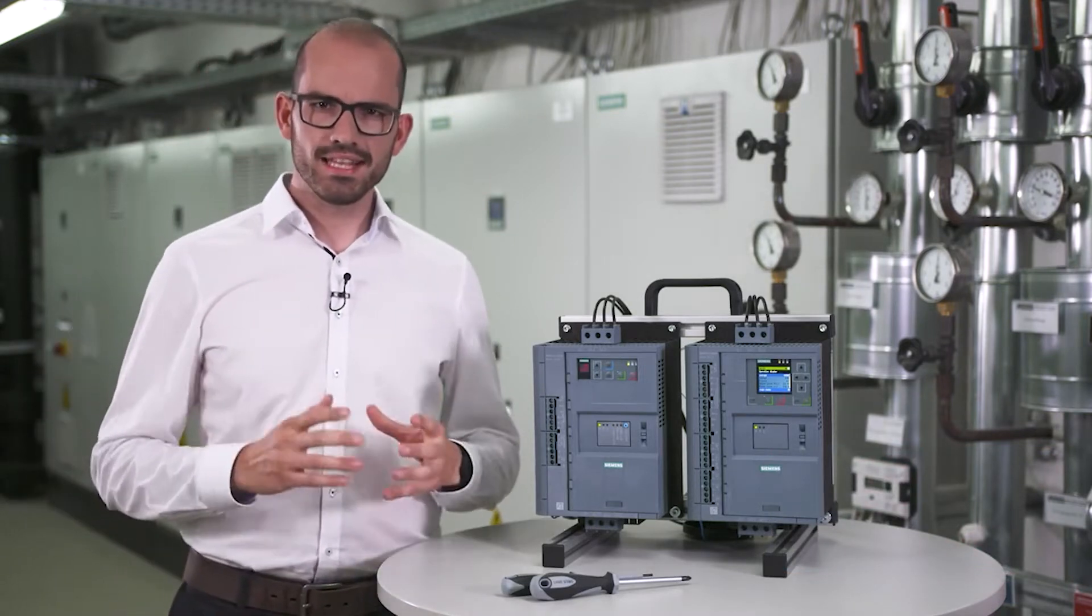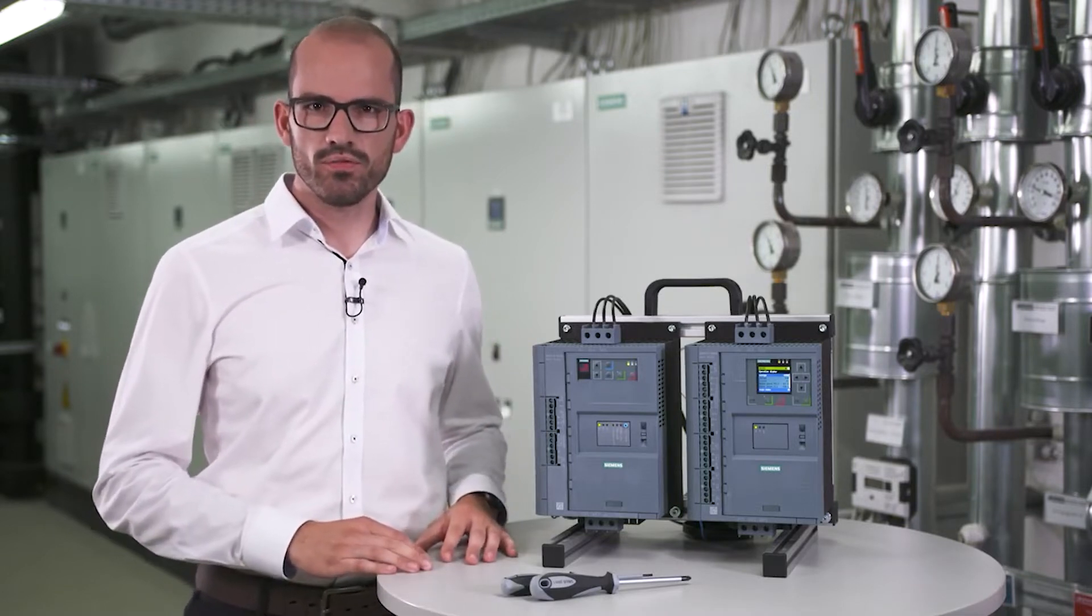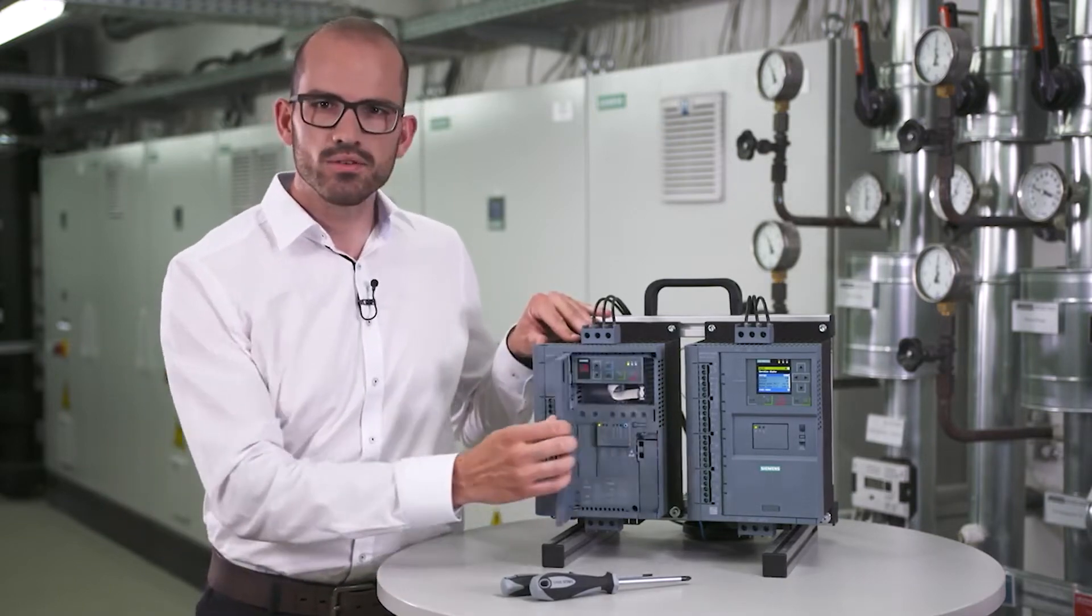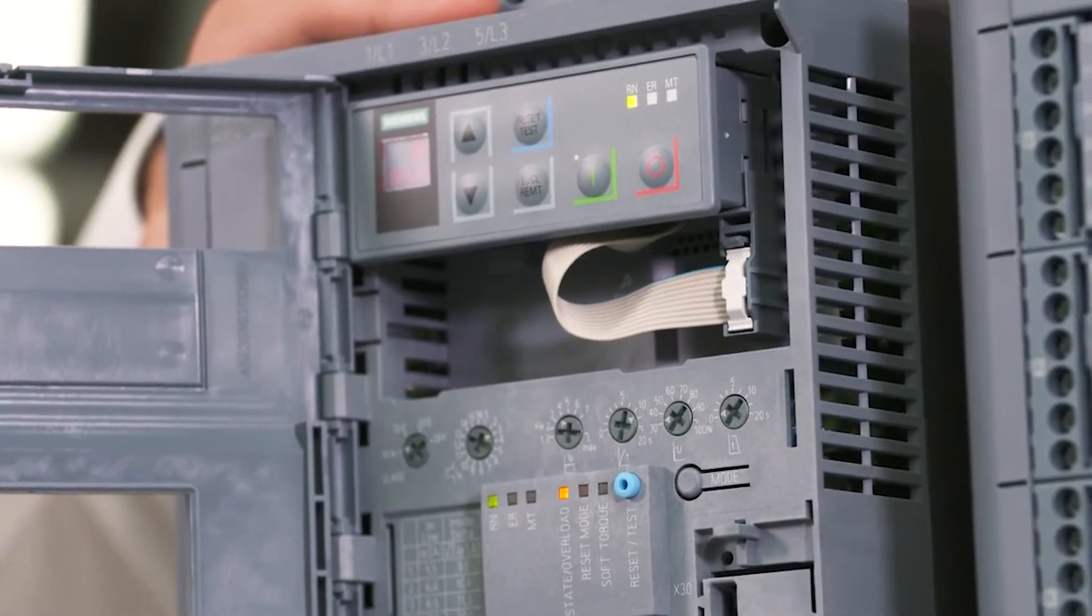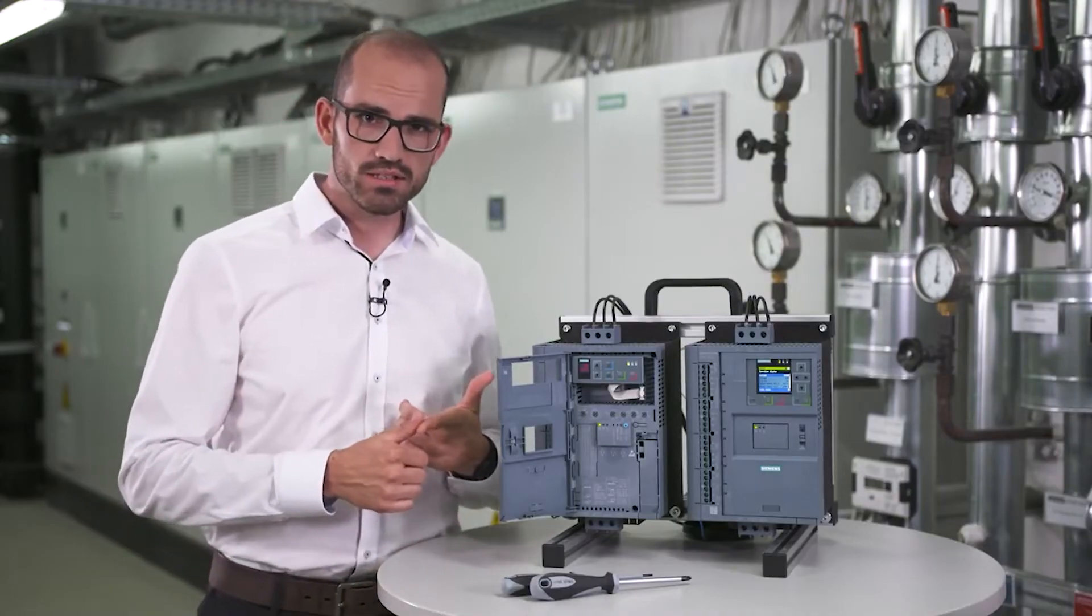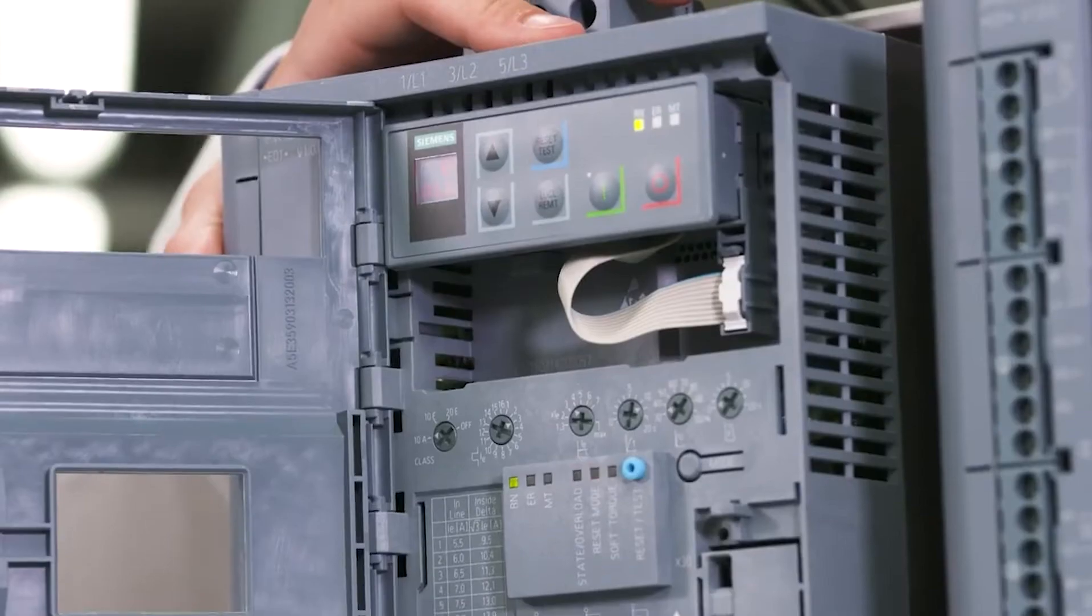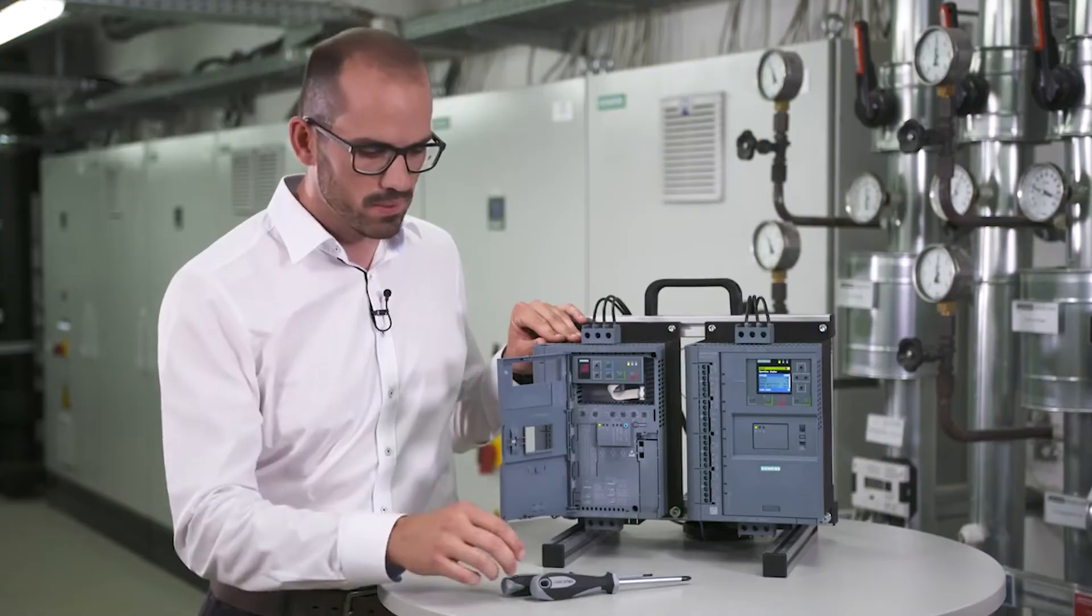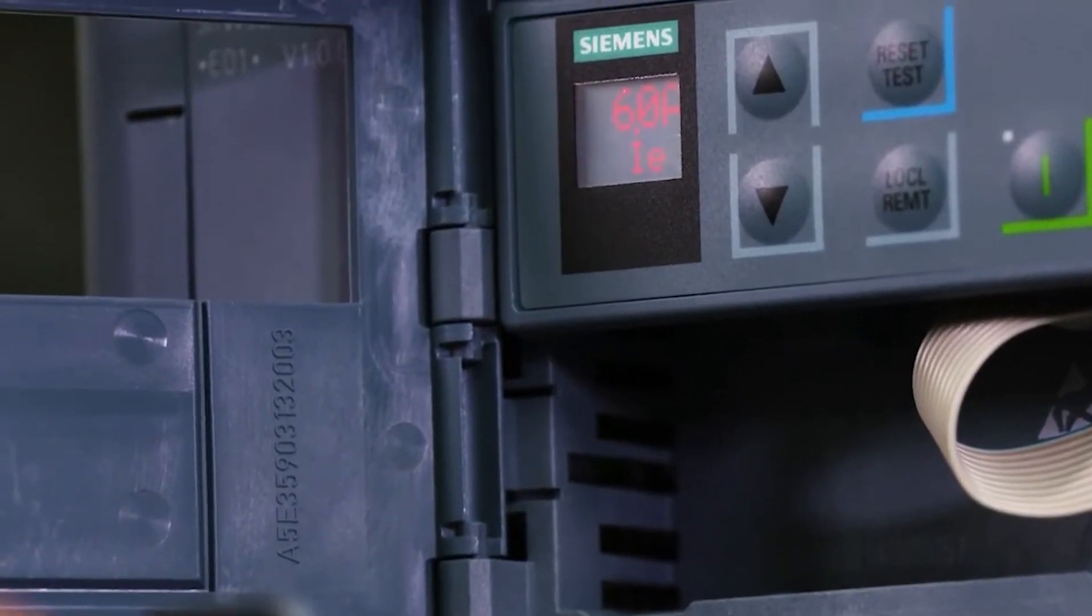Now let's have a look. How many parameters do you need to know for commissioning and how easy is it to set all of them? The six rotary knobs of the 3RW52 allow you to not forget any important parameters needed: motor rated current, current limitation factor, ramp up time, and so on. In combination with the HMI, all the values are displayed right away to make the commissioning really fast.